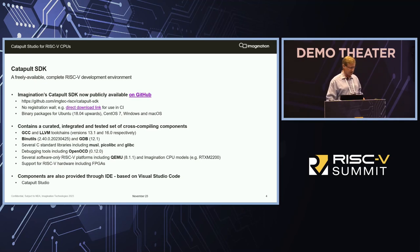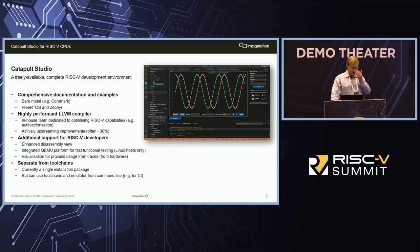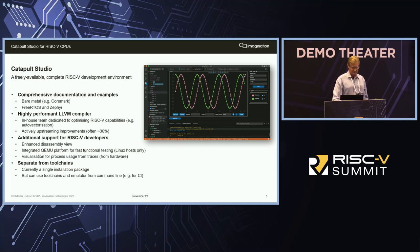The components are provided through an IDE based on Visual Studio Code, which we call Catapult Studio. As part of that environment, there's comprehensive documentation, a number of examples from bare-metal ones such as CoreMark, through to RTOS such as FreeRTOS and Zephyr. There's a highly performant LLVM compiler — we have an in-house team dedicated to optimizing the RISC-V capabilities of LLVM, actively upstreaming those improvements, typically 30% or more on some benchmarks. And there are specific support tools for RISC-V developers, including things such as an enhanced disassembly view, graph plotting for DSP-type applications, and trace visualization if you have hardware traces.